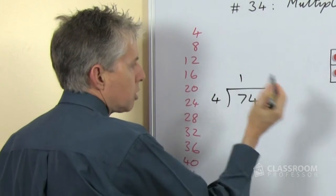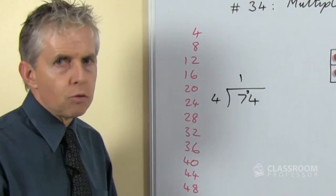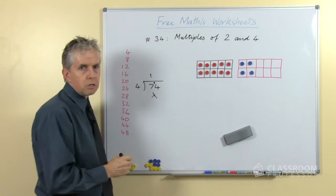We're just going to try a quick division, can we divide this by 4? 7 divided by 4 is 1 with 3 left, 34 is not a multiple of 4, so 74 is not a multiple of 4.